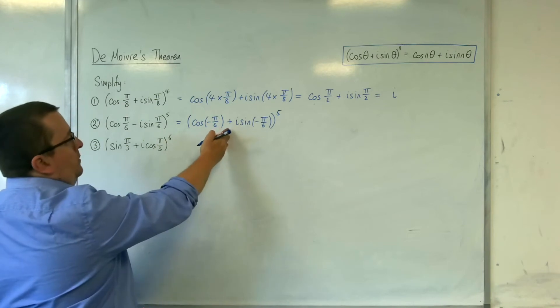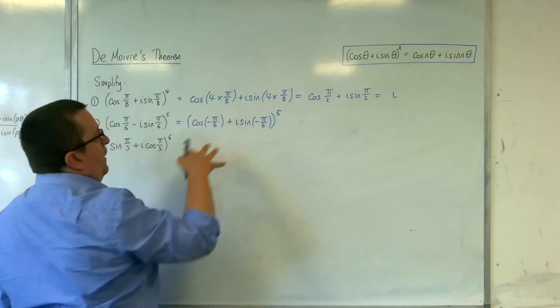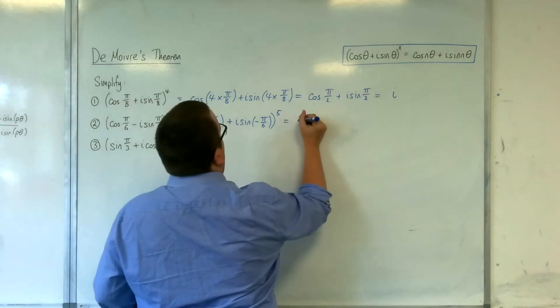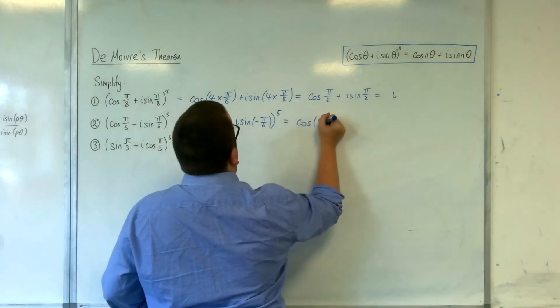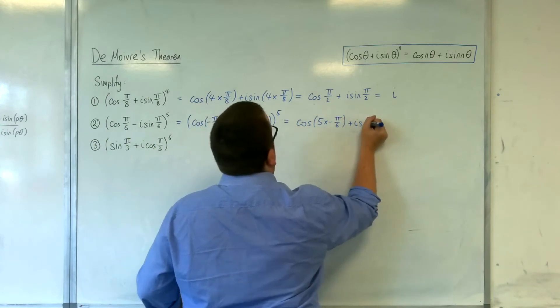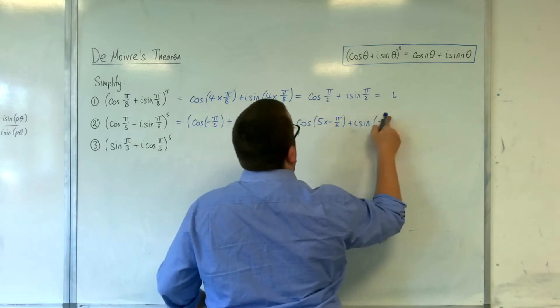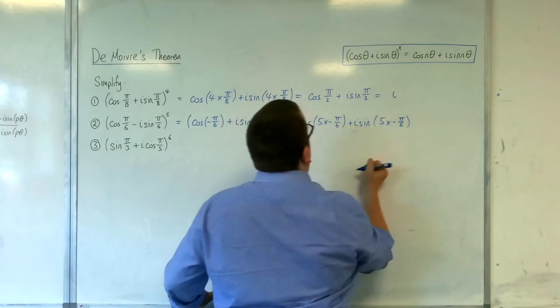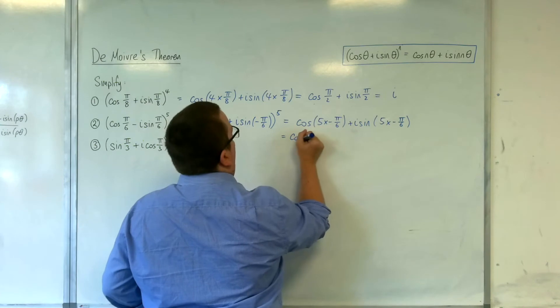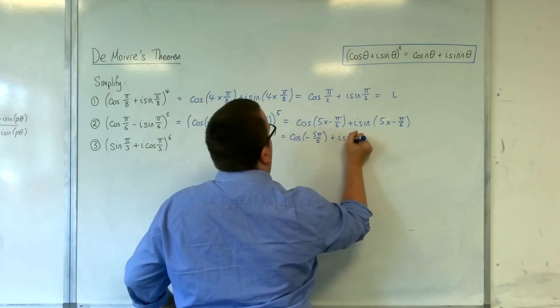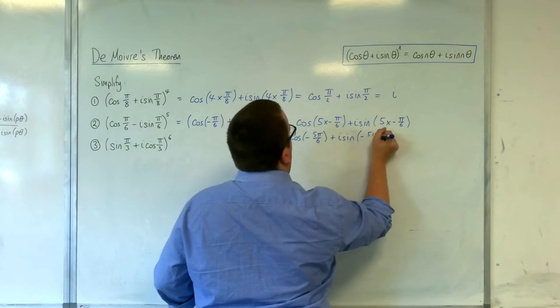Now I've got the plus in the middle, and now I can use De Moivre's theorem. So I can bring those 5s in. So I've got cosine of 5 times minus π over 6 plus i sine of 5 times minus π over 6. So cosine of minus 5π over 6 plus i sine of minus 5π over 6.